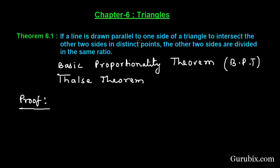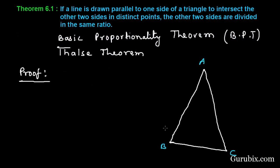Let us use the information given in the statement of the theorem. The information is: a line is drawn parallel to one side of a triangle. Suppose we have triangle ABC, and a line DE is drawn parallel to one side BC, intersecting the other two sides in distinct points.